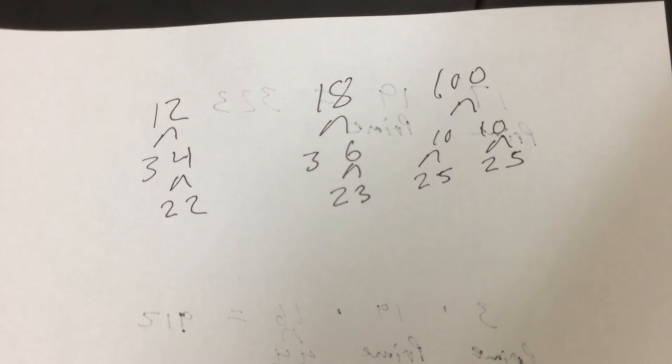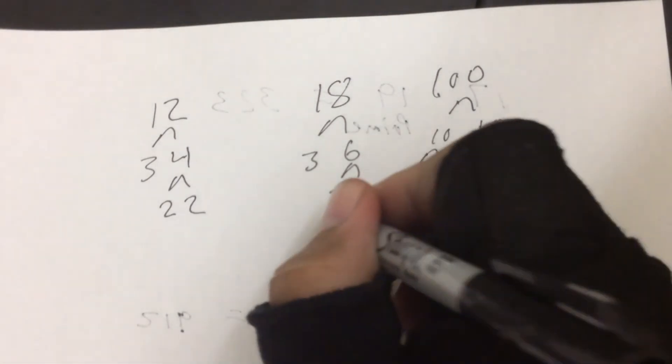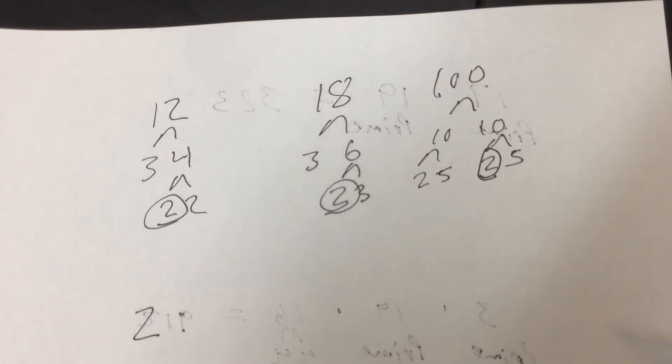So that's step number one. It's going to be what do they all have in common. So if we look at this, we have a 2 here, we have a 2 here, we have a 2 here. So we could put a 2 down. And then is there anything else? Nope, that looks like it's it.